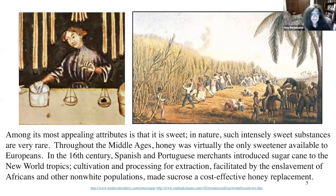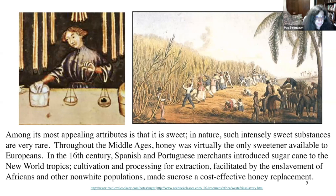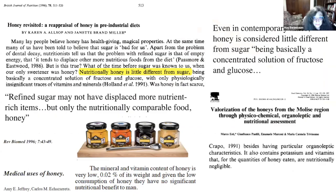One of the most appealing attributes of honey is that it's sweet, and in nature intensely sweet substances are very rare. Throughout the Middle Ages, honey was virtually the only sweetener available to Europeans, up until about the 15th century when Spanish and Portuguese merchants introduced sugarcane into the New World tropics. Sadly, slavery made sucrose a cost-effective honey replacement, and it did basically replace honey to a large extent throughout the 19th and 20th centuries.